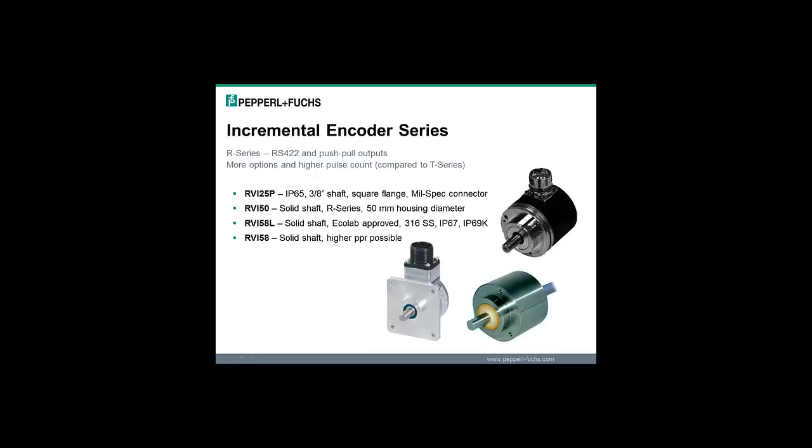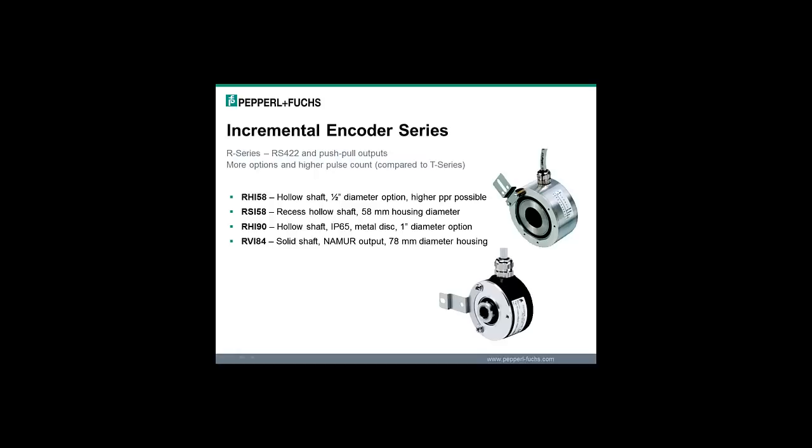The R-series has more options with higher pulses per revolution, up to 50,000. In the R-series, the RHI-58 has a hollow shaft with a half inch diameter option and higher pulses per revolution is possible. The RSI-58 is a recessed hollow shaft with a 58 millimeter diameter housing. The RHI-90, hollow shaft with a one inch diameter option. And the RVI-84 is a solid shaft with an NAMUR output and a 78 millimeter diameter housing.